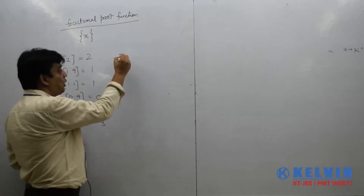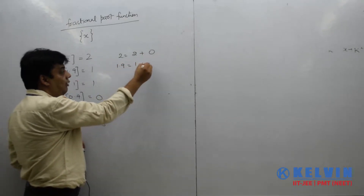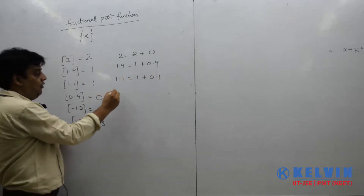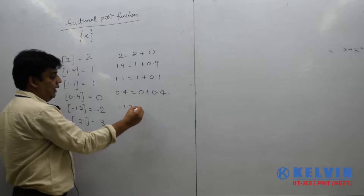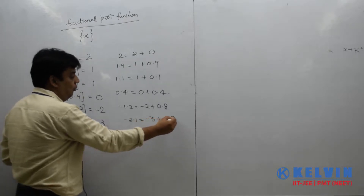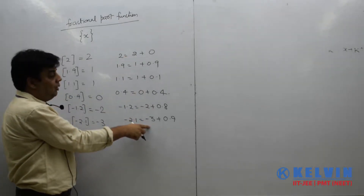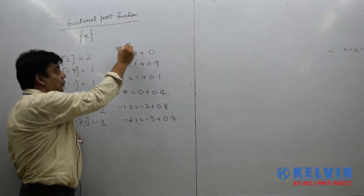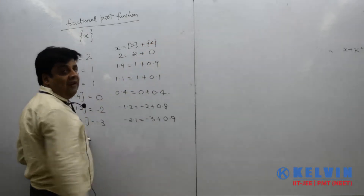Now, I am writing these numbers in decomposed form. 2 can be written as 2 plus 0. 1.9 can be written as 1 plus 0.9. 1.1 can be written as 1 plus 0.1. 0.4 can be written as 0 plus 0.4. Minus 1.2 can be written as minus 2 plus 0.8. Minus 2.1 can be written as minus 3 plus 0.9. Here I have written the greatest integer part, and the remaining value is the fractional part of x.